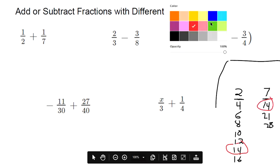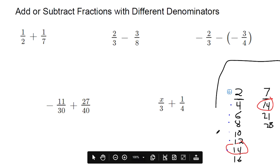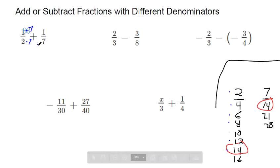What you want to do is multiply the first fraction by 7. I'm going to multiply this by 7 and multiply this by 7. Multiply the top and the bottom by 7.